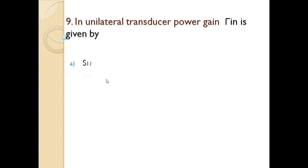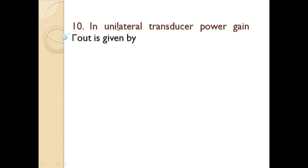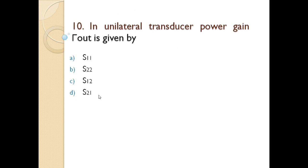Question 9: In unilateral transducer power gain, γIN is given by — S11, S12, S22, or S21? The answer is S11. Question 10: In unilateral transducer power gain, what is the value of γOUT? Options are S11, S22, S12, or S21. Substituting the unilateral condition S12 = 0 into γOUT = S22 + S12·S21·(terms), we get γOUT = S22.